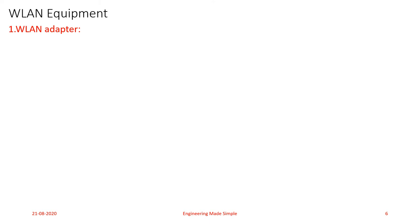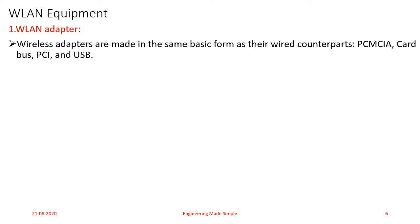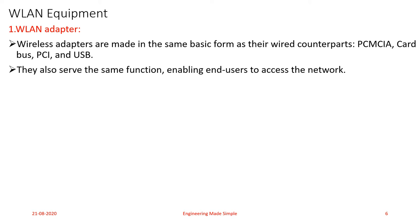If you are planning to set up a wireless local area network in your office or anywhere else, you need the following WLAN equipment. The first equipment required is a wireless local area network adapter. Wireless adapters are made in the same basic form as their wired counterparts — that is PCMCIA, CardBus, PCI, and USB. These wireless adapters perform the same function as their wired counterparts, enabling users to access the network.